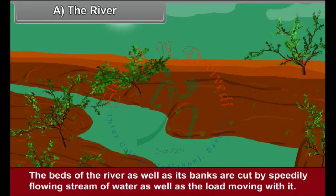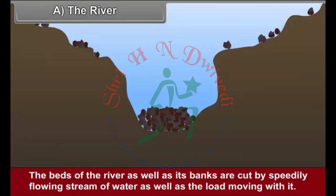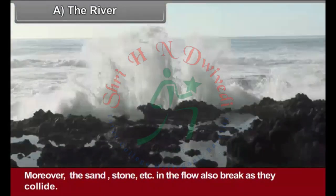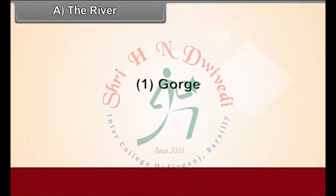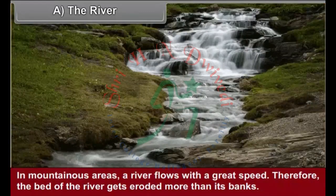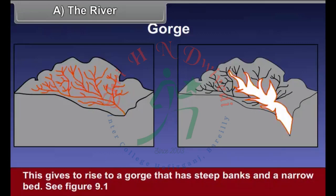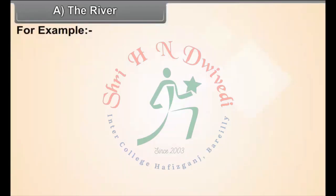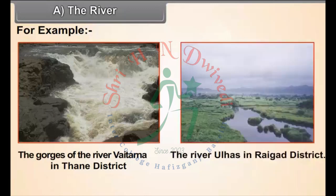Erosion: The beds of the river as well as its banks are cut by the speedily flowing stream of water as well as the load moving with it. Moreover, the sand, stone, etc. in the flow also break as they collide. Gorge: In mountainous areas, a river flows with great speed. Therefore, the bed of the river gets eroded more than its banks. This gives rise to a gorge that has steep banks and a narrow bed. See figure 9.1. For example, the gorges of the river Vaitarna in Thane district and the river Ullas in Raigad district.